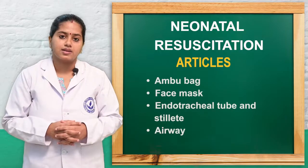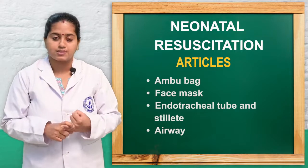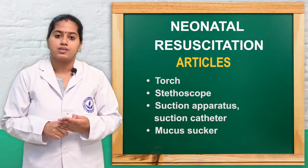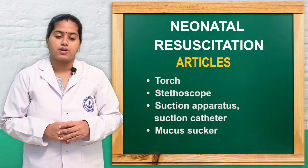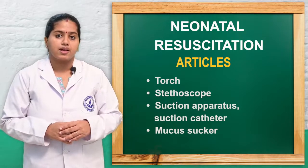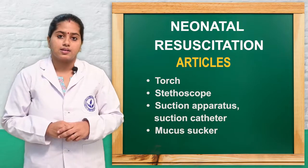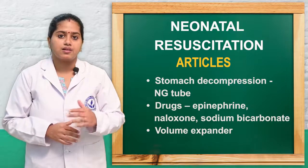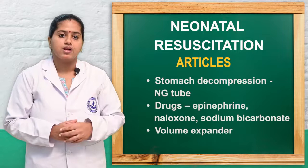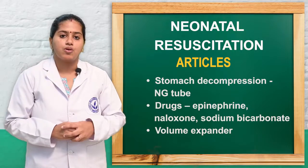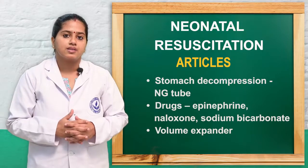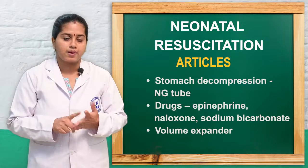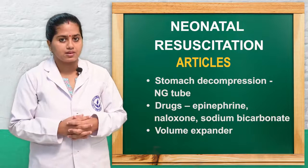We will see what are the articles needed. An ambu bag is needed, a face mask is needed, an endotracheal tube with stylet is needed, an airway, a torch, and a stethoscope are needed. An oxygen mask, suction apparatus, and suction catheters are needed. A mucous sucker and a De-Lee sucker are also needed. For stomach decompression, an NG tube or feeding tube is needed to remove gastric secretions. Drugs such as epinephrine, naloxone, and sodium bicarbonate are needed, and volume expanders should also be kept ready.